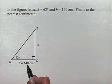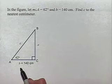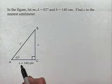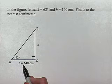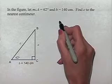So we're looking for the trig function that gives us a relationship between an angle, the side adjacent, and the hypotenuse. And that trig function is cosine.